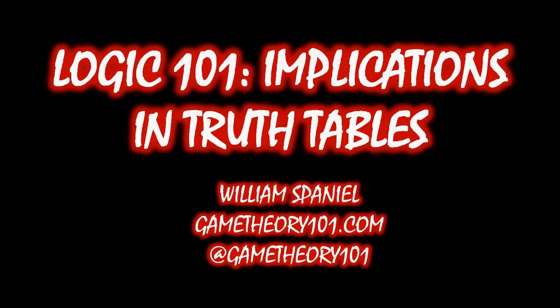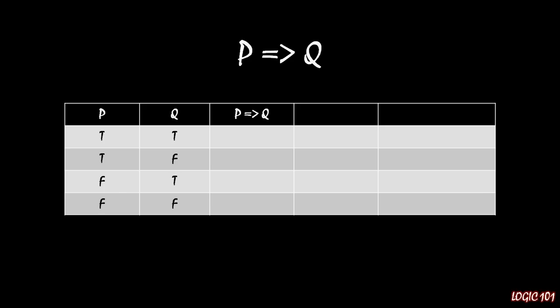Welcome back to Logic 101, I'm William Spaniel, and this lecture is on implications in truth tables. Let's kick off with a slight amount of review. Here's a truth table for the implication 'if p then q.' We start a truth table by creating columns for each simple sentence in the overall big sentence, so here there's just two: p and q. Then we create additional columns for each more complicated sentence. Here there's only one more complicated sentence, 'if p then q,' the conditional itself. Then we fill in the rows for each combination of truth values for the simple sentences.